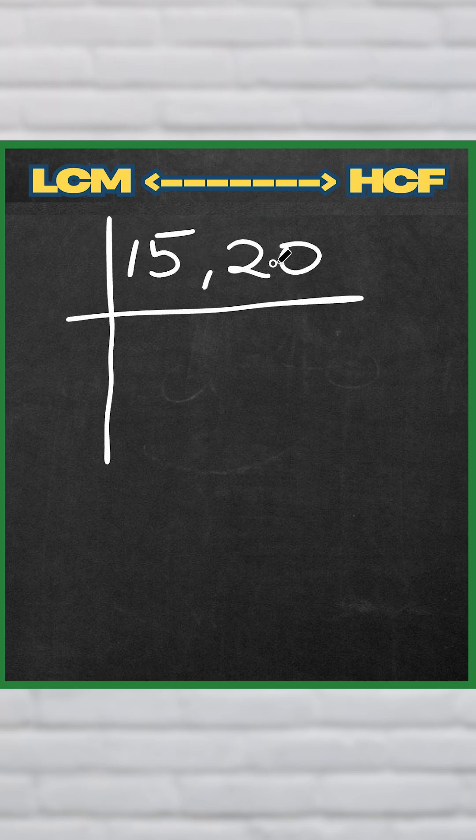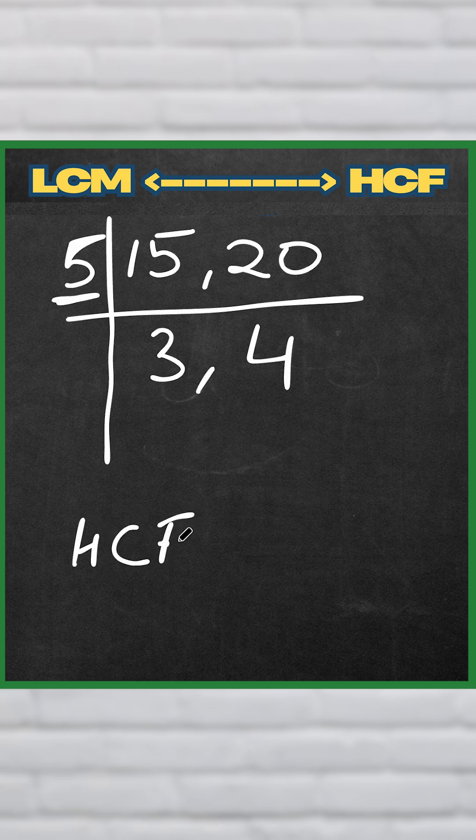So it's a 5 at the end and a 0, at least 5 will divide both of them, right? So 5 times 3 is 15, 5 times 4 is 20. Now there is no number that can divide 3 and 4 both, right? So then 5 becomes our HCF, so our HCF is 5.